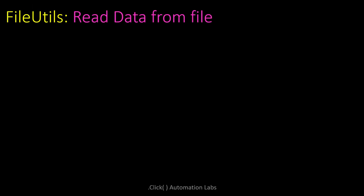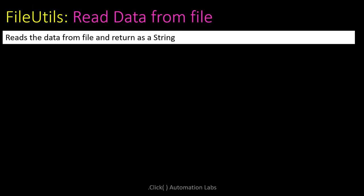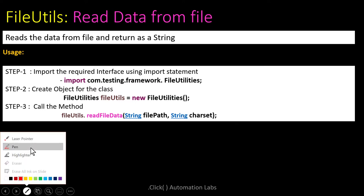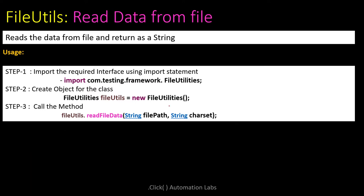Now we'll look at reading data from a file. This method helps read data and store it as a string from any input file. It currently supports .txt and .property file formats, so keep that in mind. To use this, you need to import the FileUtilities class.